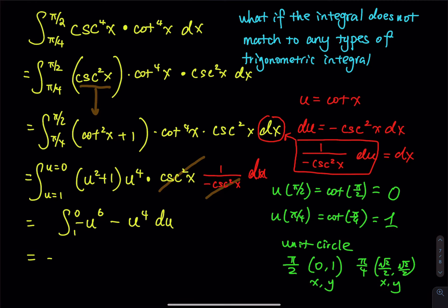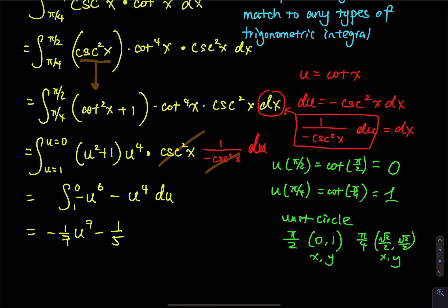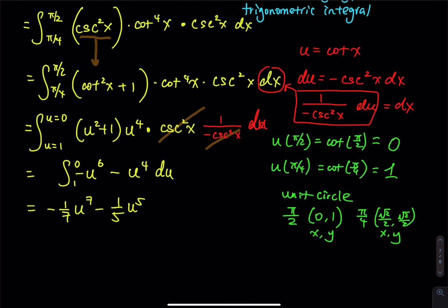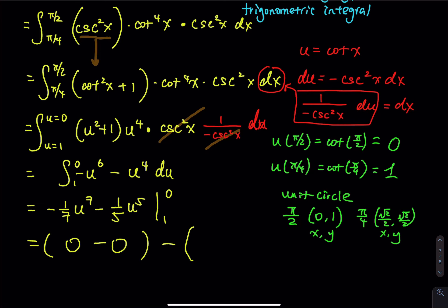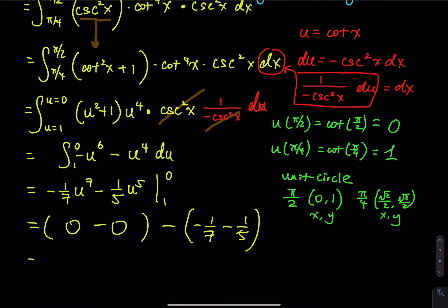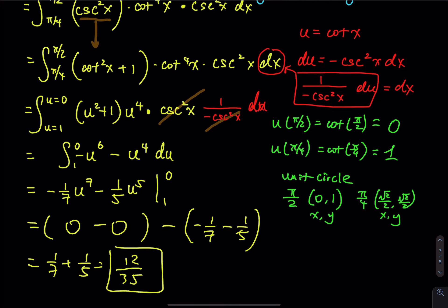Integrating gives negative 1/7 u to the seventh minus 1/5 u to the fifth, evaluated as u goes from 0 to 1. Plugging in 0 gives 0 minus 0. Then minus plugging in 1: negative 1/7 minus 1/5. So this becomes 1/7 plus 1/5, which equals 12/35. So that is the answer to this integral.